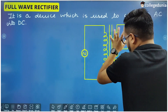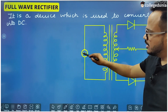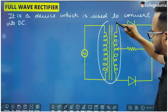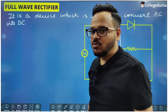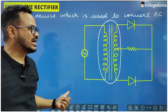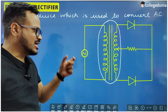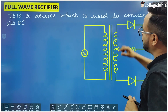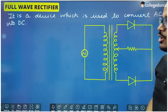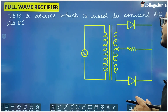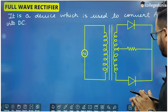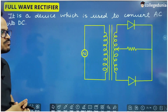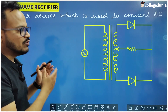The various parts of the rectifier are shown in this diagram. This is the input AC which is to be converted into DC, and this whole arrangement is nothing but a transformer. A transformer has two coils — primary coil and secondary coil — with a laminated core placed in between. These two are PN junctions, and this is an external load resistance across which we will get our output direct current.